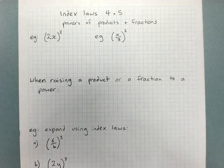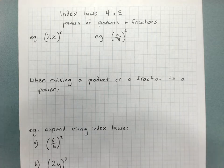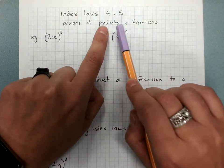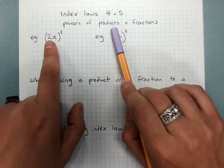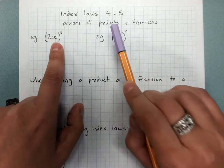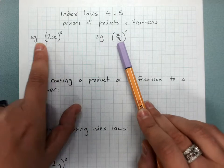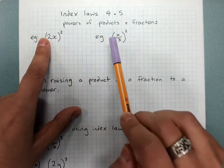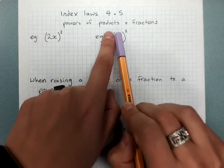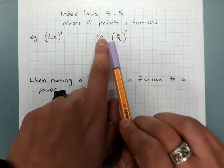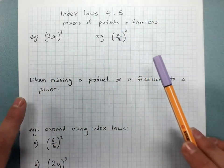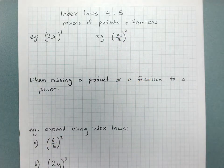Index laws 4 and 5 are about powers of products and fractions. A product is when we multiply two numbers or a number and a letter together — for example, 2 times x. A fraction of course we know. So we have a product in brackets to a power, and a fraction in brackets to a power. Index laws 4 and 5 are about removing these brackets, and there is a set of laws to follow.